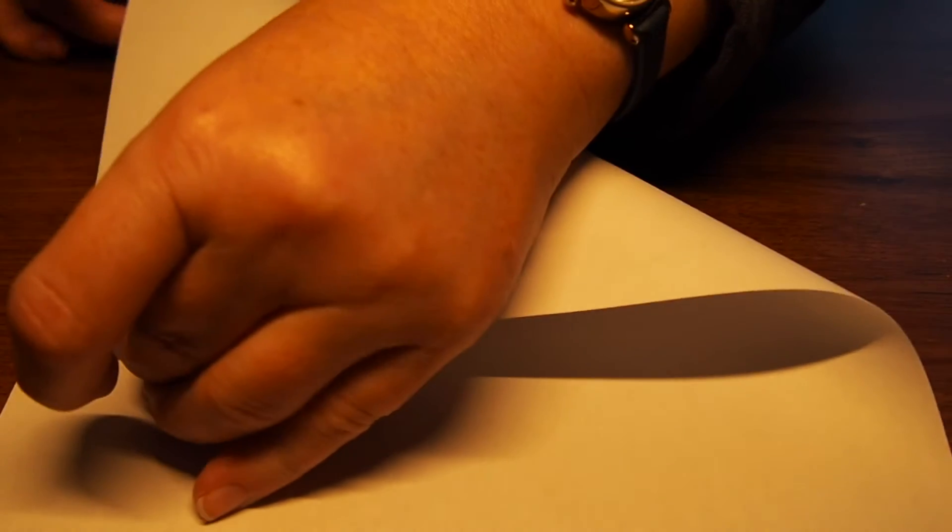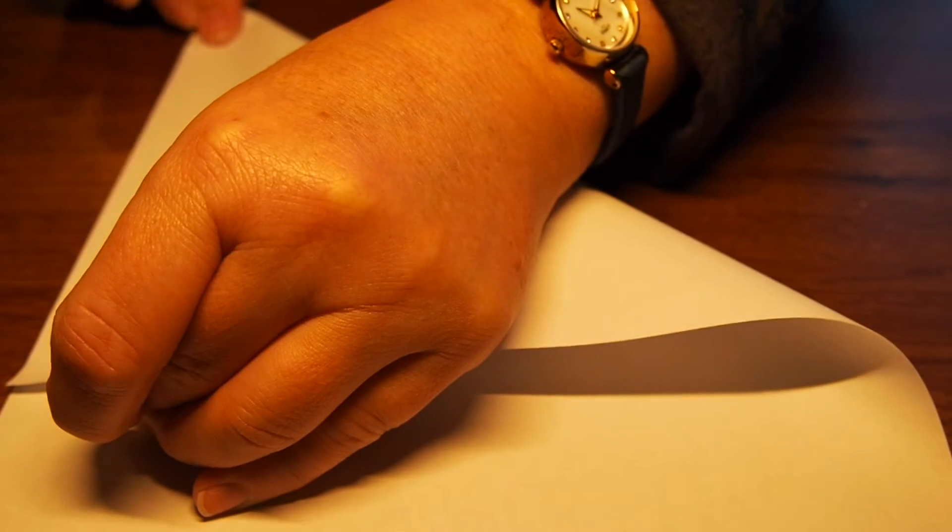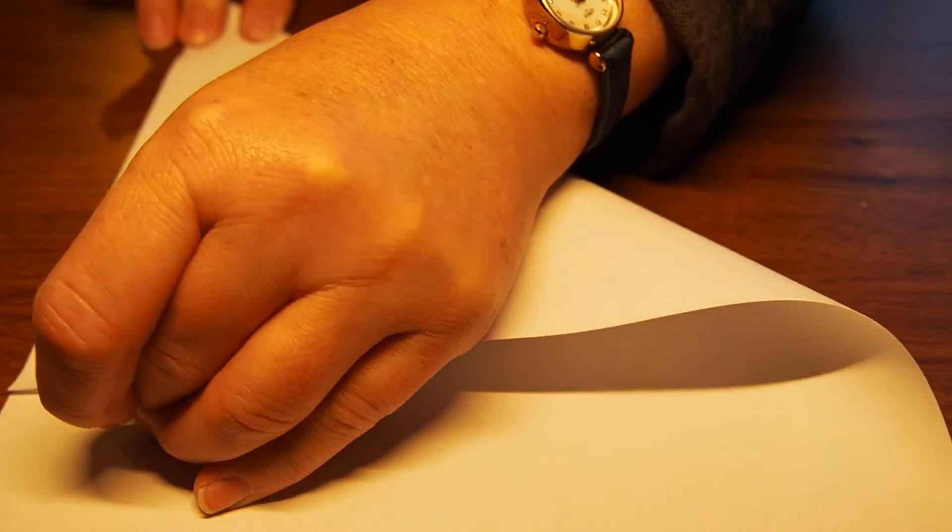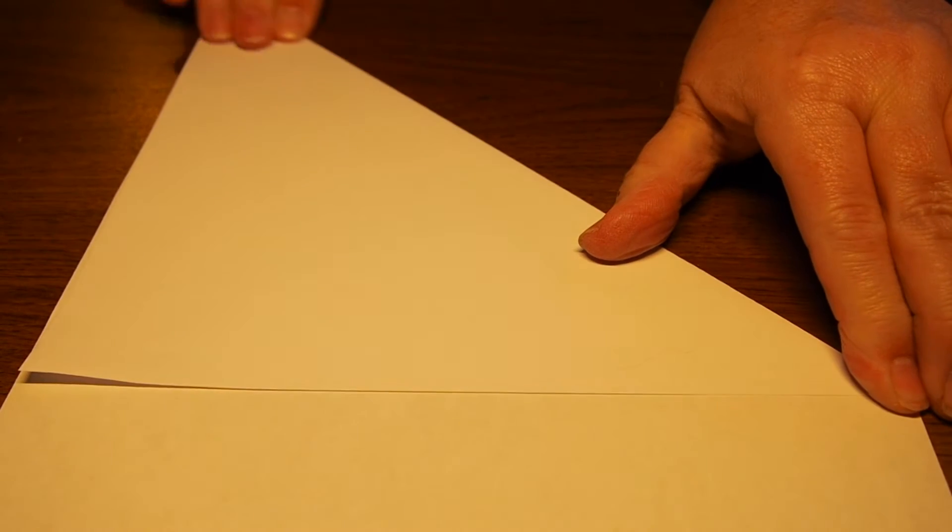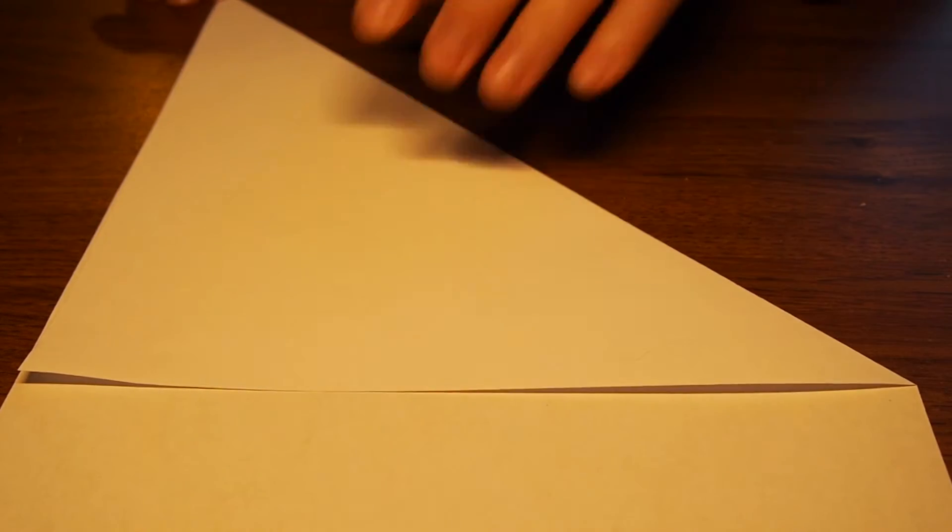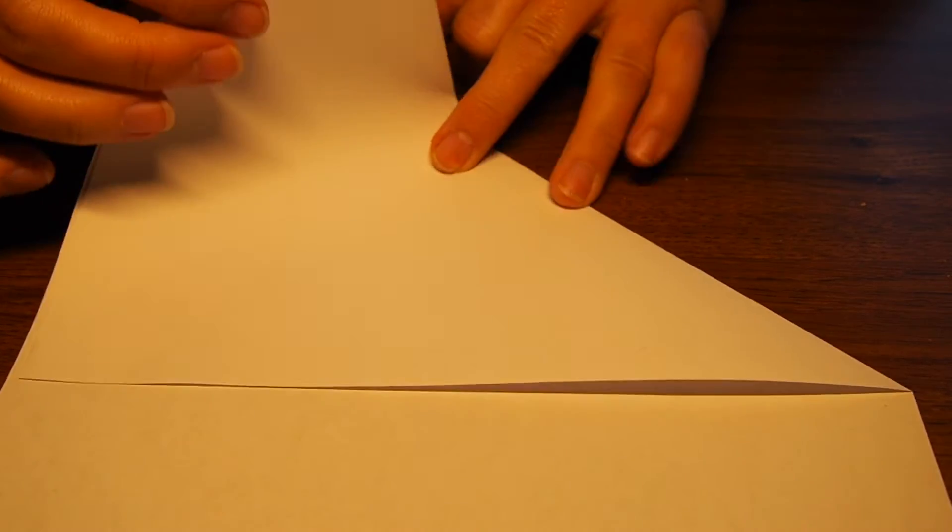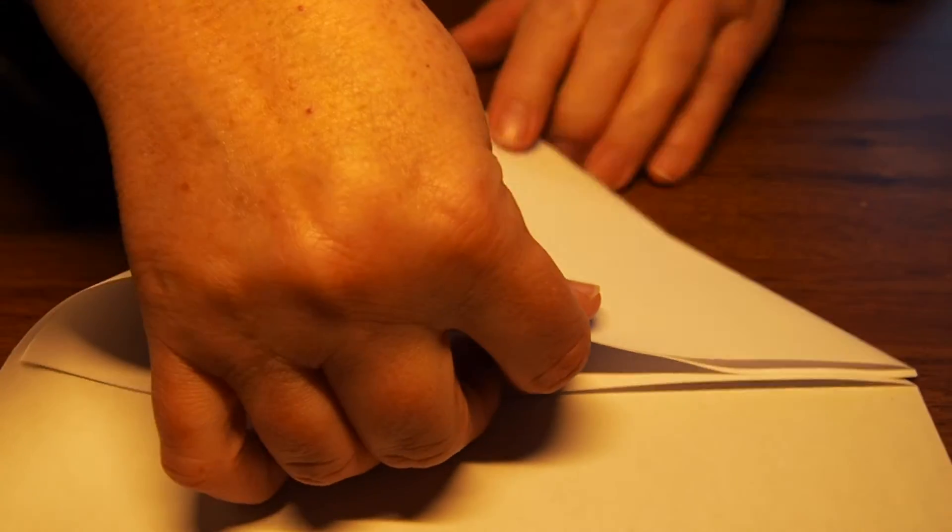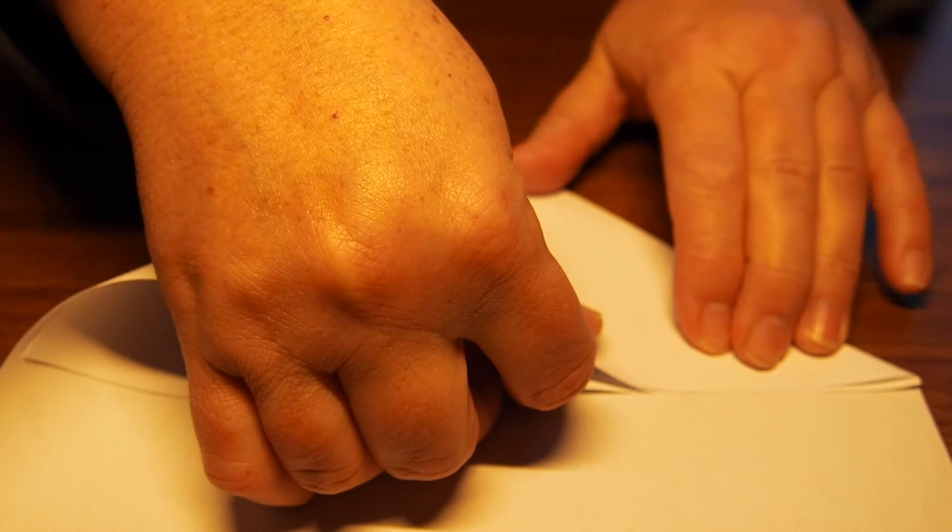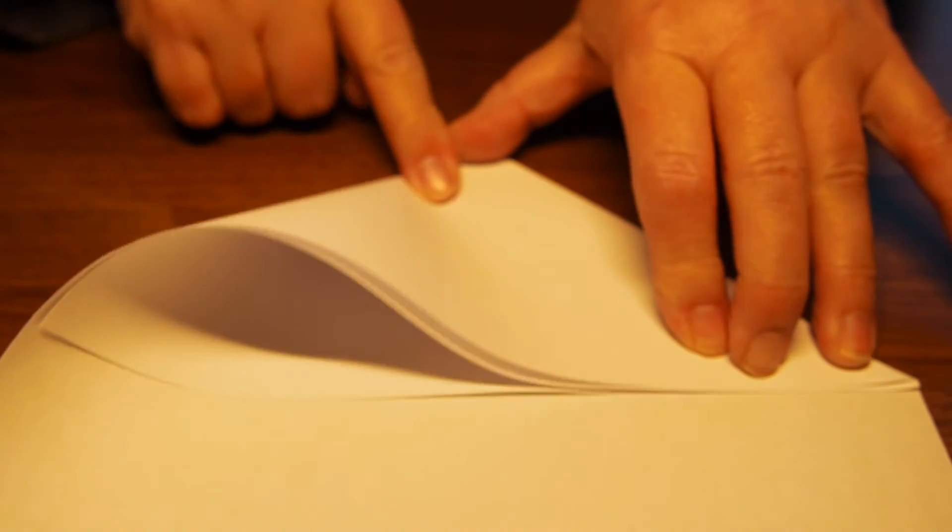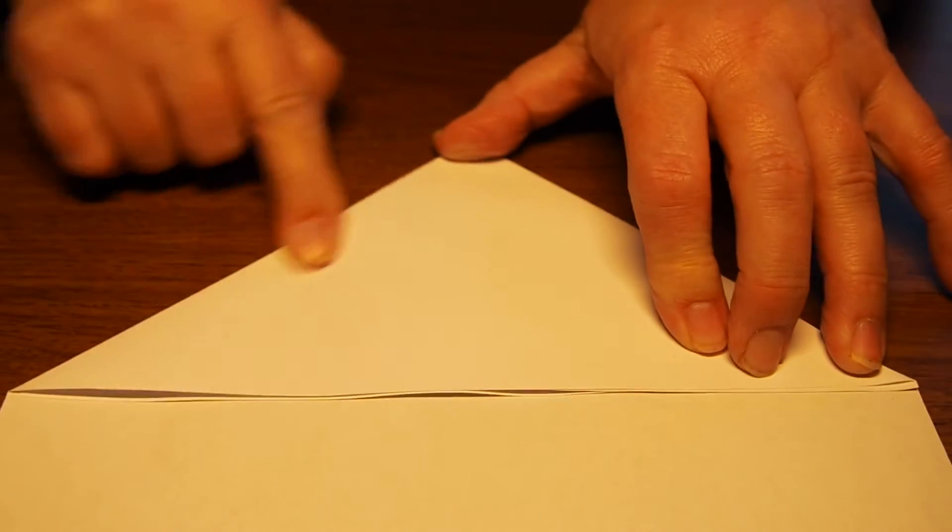We take an A4 sheet of paper, fold the bottom corner up so that the edge is parallel with the other edge and crease it, then take the pointy end up to the corner of the fold you just made and crease it.